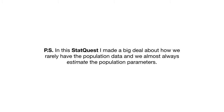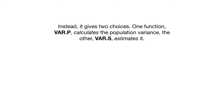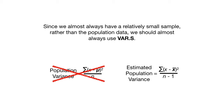P.S. In this StatQuest, I made a big deal about how we rarely have the population data and we almost always estimate the population parameters. One reason I did this was because, while many software packages estimate the variance and standard deviation by default, Microsoft Excel does not. Instead, it gives two choices. One function, VAR.P, calculates the population variance. The other, VAR.S, estimates it. Since we almost always have a relatively small sample rather than the population data, we should almost always use VAR.S.